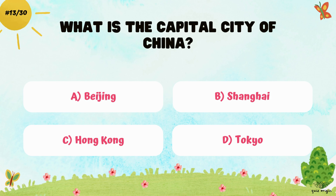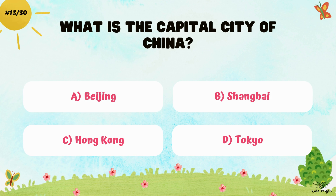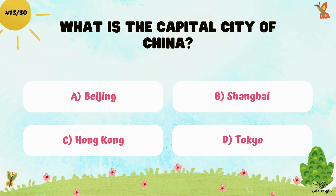What is the capital city of China? A. Beijing, B. Shanghai, C. Hong Kong, and D. Tokyo.